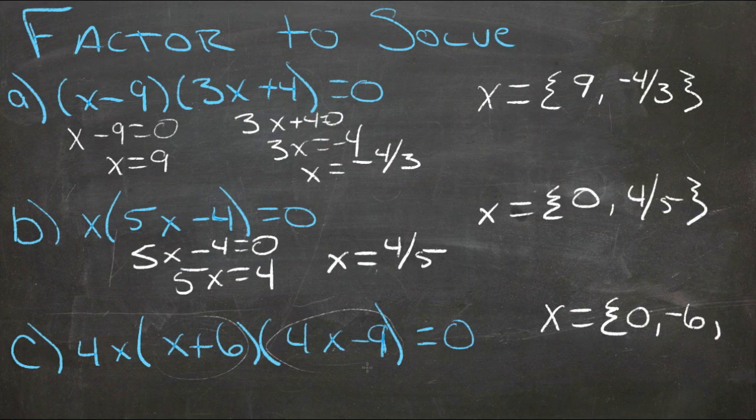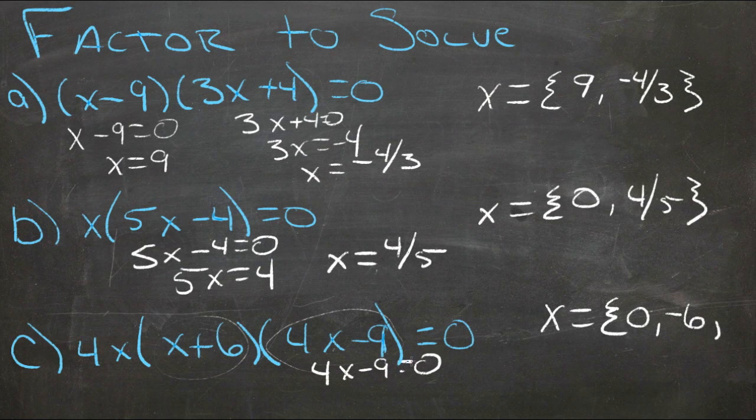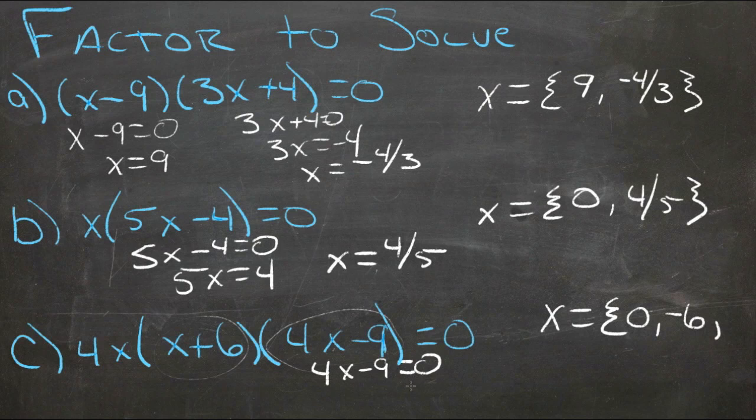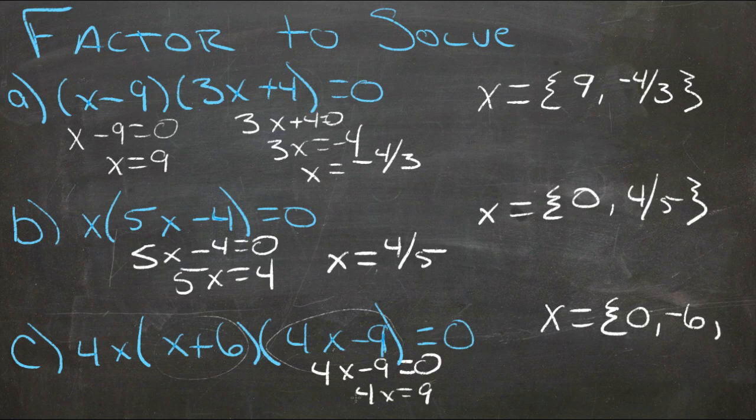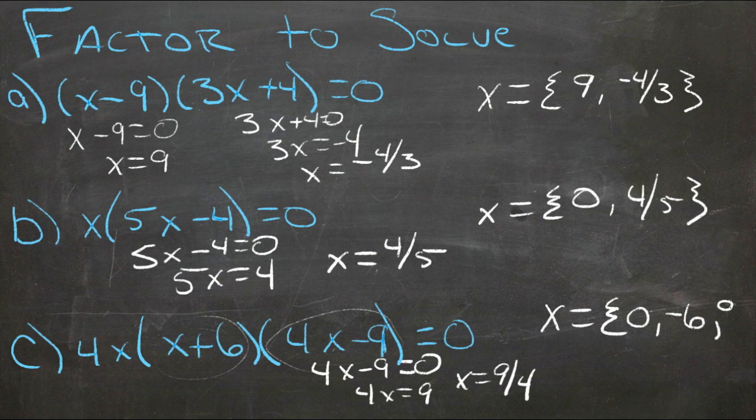And then in our last one, we have 4x minus 9, and we want that to be zero. So we have 4x minus 9 equals zero. We'll solve it as its own little equation. Add 9 to both sides. 4x equals 9. And divide both sides by 4. x equals 9 fourths. So that's our third solution here. 9 fourths.